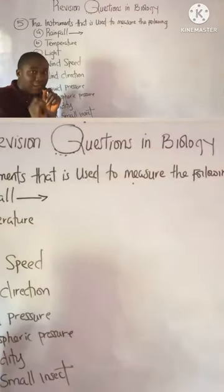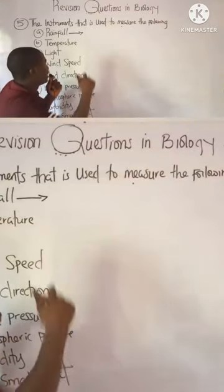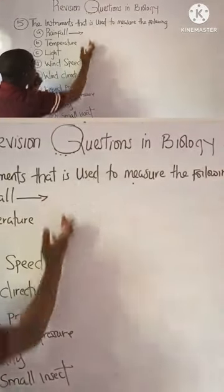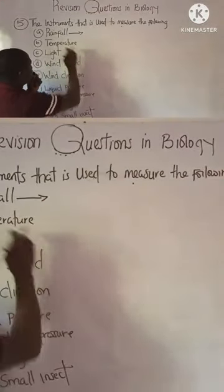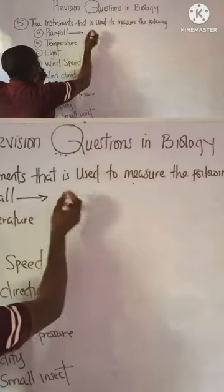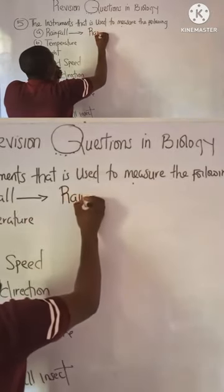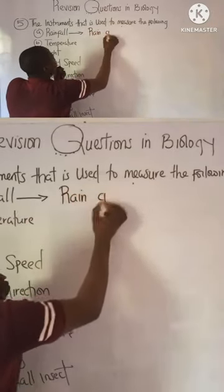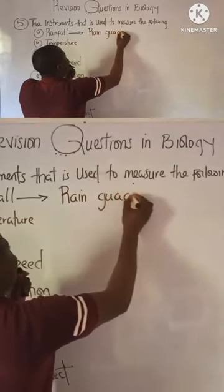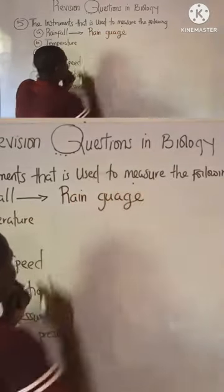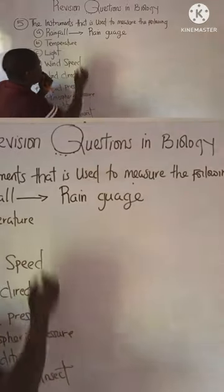The abiotic component is the non-living component. Now, what are the instruments used to measure all of these? For rainfall, it is simply measured by an instrument called the rain gauge. This must be noted.